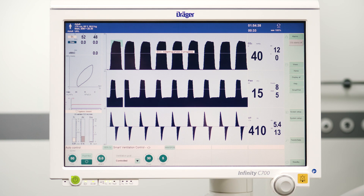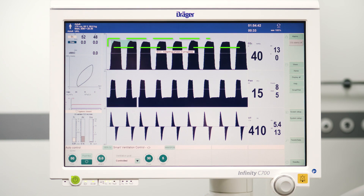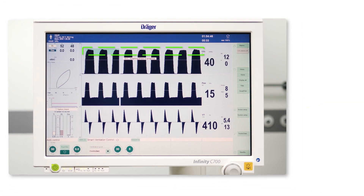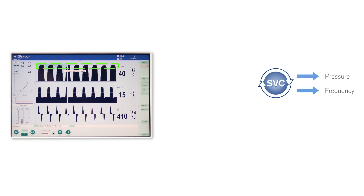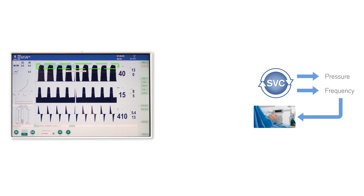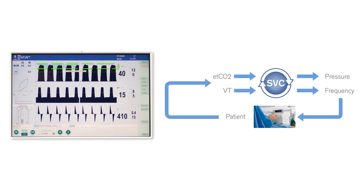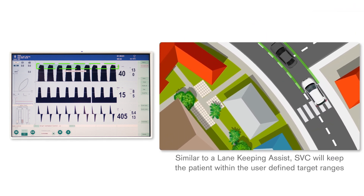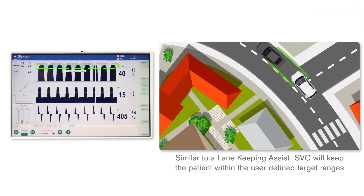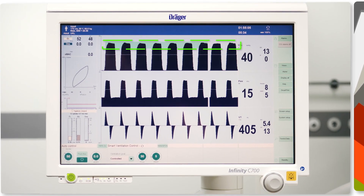Now you can see a green band in the carbon dioxide waveform. This band represents the target range of end-tidal carbon dioxide. By adapting the ventilation parameters, like the breathing frequency, Smart Ventilation Control will bring the patient into the target ranges of tidal volume and end-tidal carbon dioxide. During the entire surgery, Smart Ventilation Control will assist you in maintaining these target ranges.